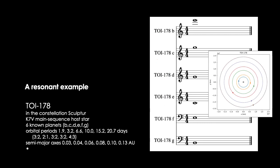Here's another example, another resonant system like TRAPPIST-1 called TOI 178. Here there are six planets in very tight resonant orbits. So resonant that we expect this chord to be very harmonic. And indeed, it's a perfect C major chord.